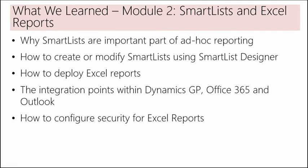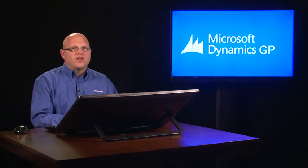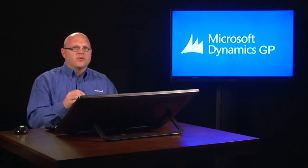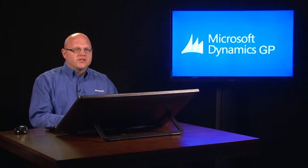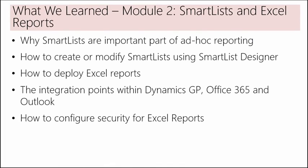So, what we've learned in Module 2 around SmartLists and Excel reports. We learned why SmartLists are an important part of ad hoc reporting — it's very easy to create a SmartList, modify it, save it as a favorite, utilize it in other areas of the application whether limiting lookup information or quickly navigating to a form to edit or do an inquiry on a record. It's also very simple to take information from your query, export it to Excel or Word, and work with that data further. We also looked at SmartList Designer, where you can create your own SmartList and have that information available in a query format with all the existing SmartList functionality.